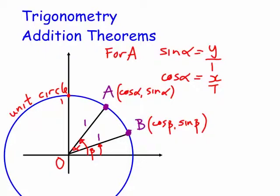This is a bit of a whirlwind tour, so let's get on with it. First, we're drawing right angle triangles to get the coordinates of points A and B in terms of their angles. The y-coordinates are the sines (opposite over hypotenuse) and the x-coordinates are the cosines (adjacent over hypotenuse).